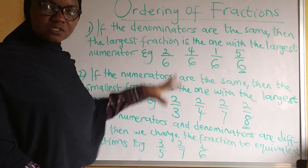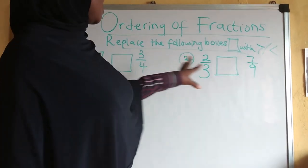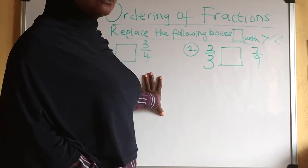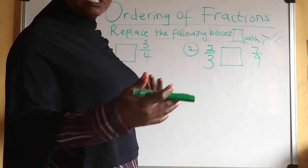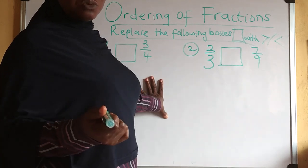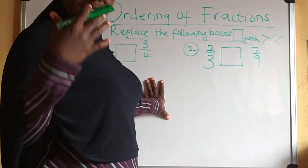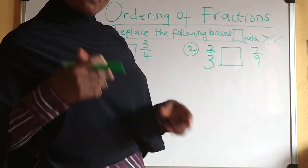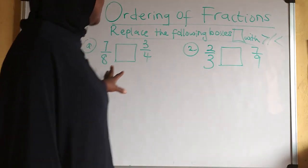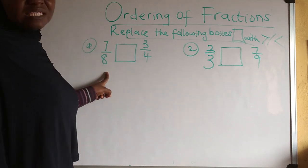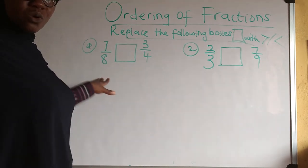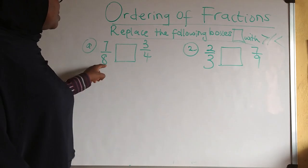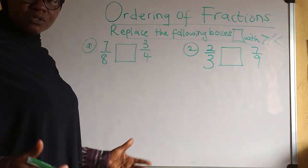Now let's look at some examples to actually see how this works and to understand the concepts we've treated. Take 7/8 and 3/4 — neither the numerators nor the denominators are the same. The numerator of the first is 7 and of the second is 3; the denominator of the first is 8 and of the second is 4. Since they are not the same, we need to change them to equivalent fractions.